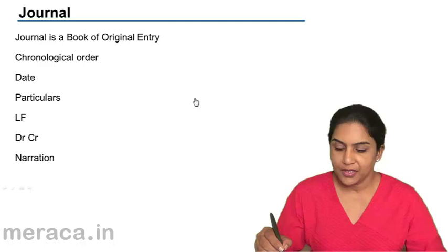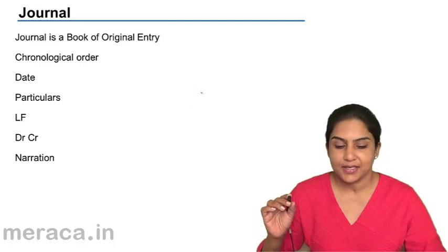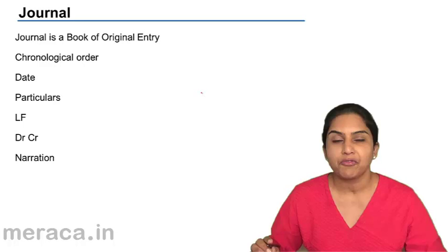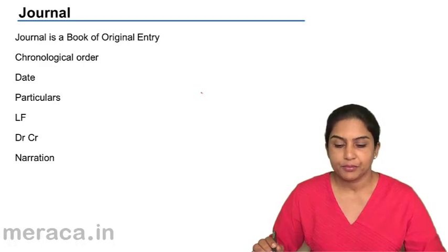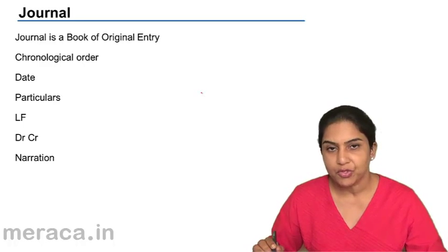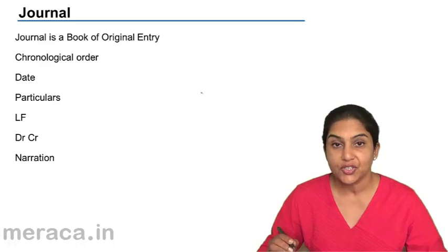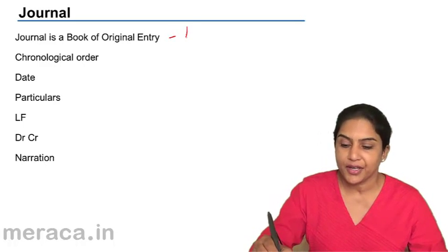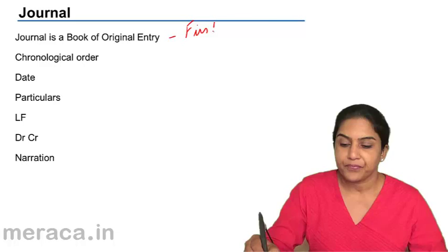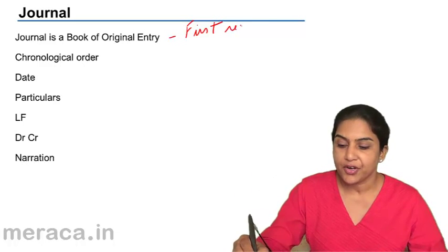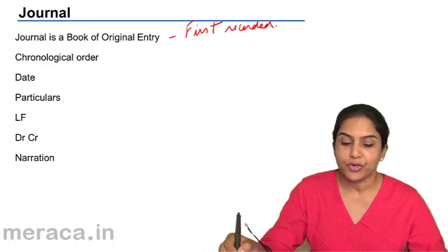What is a journal? A journal is a book of original entry. Why is it called a book of original entry? Because all transactions are first recorded in the journal.